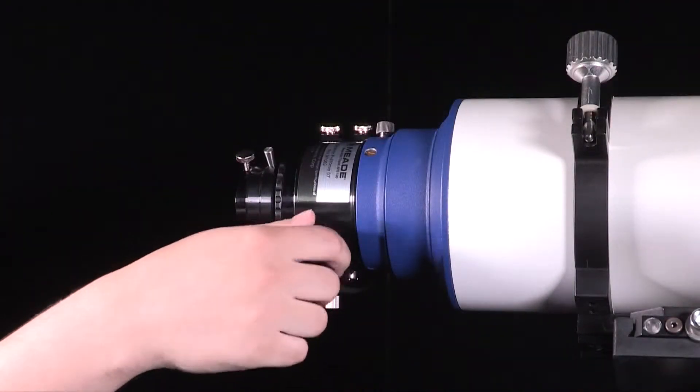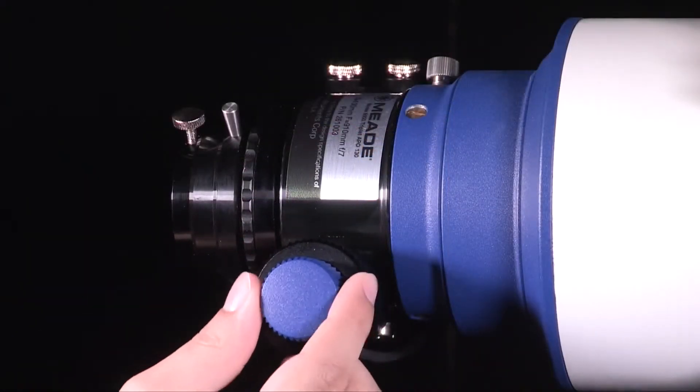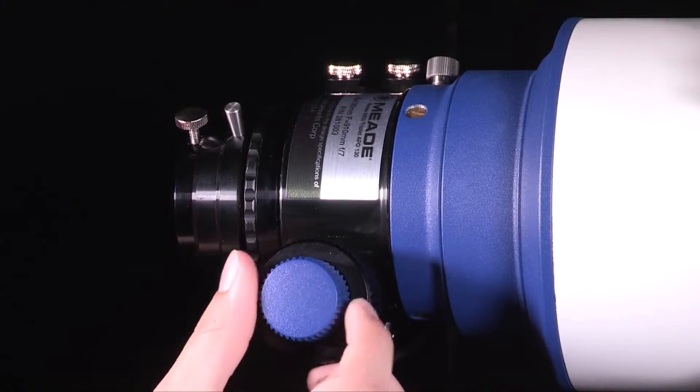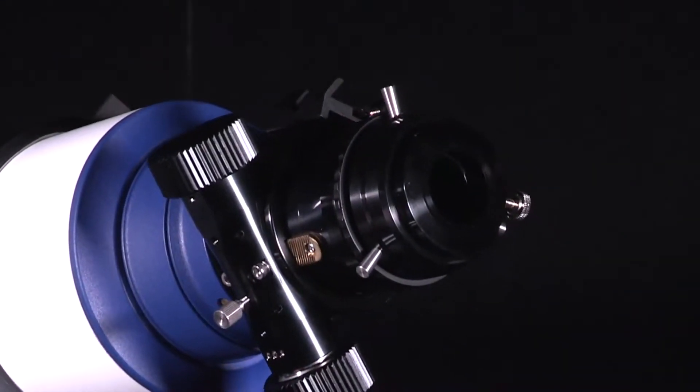New to the Series 6000 triplet APOs is the proprietary 2.5-inch dual-speed rack and pinion focuser. The focuser comes with a 10-to-1 fine focus knob for precise focusing.